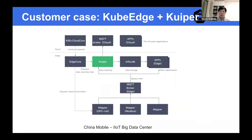Here is a customer case leveraging Kuip Edge and Kuip. Kuip accepts data collected from devices connected to Kuip Edge. After processing, one rule saves the data to InfluxDB — a time-series database deployed at the edge — while another rule synchronizes or sends data from the edge to a remote MQTT broker deployed at the cloud side.